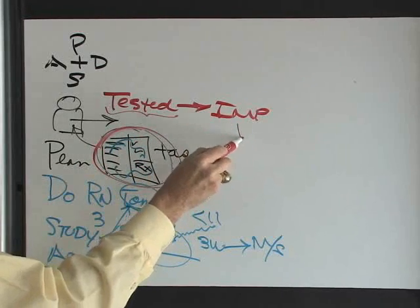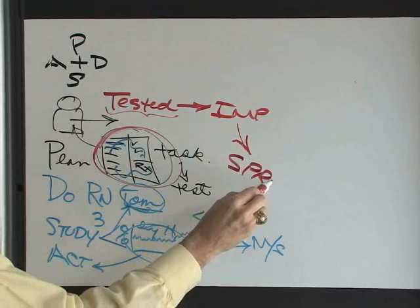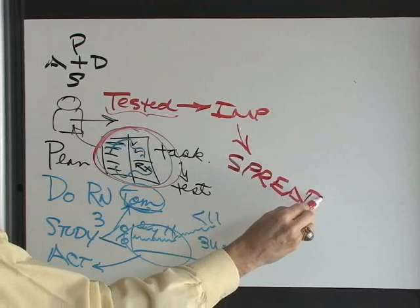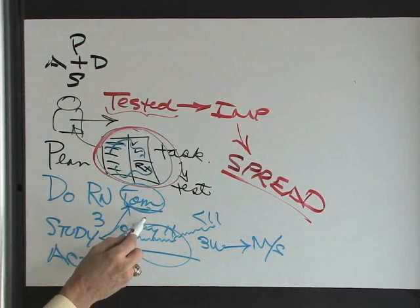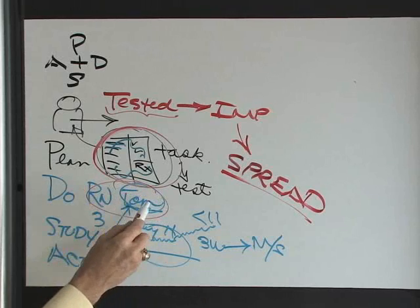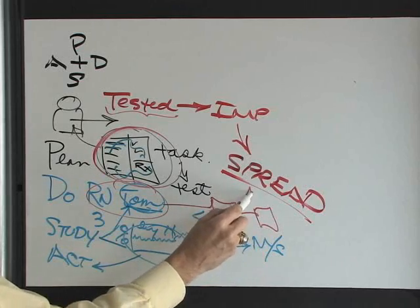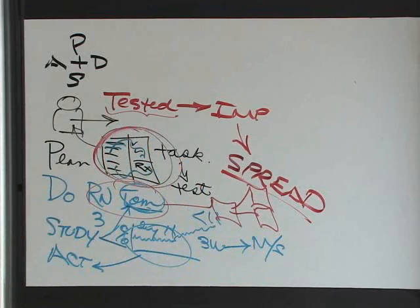And finally, once we've implemented, we'll be ready to engage ourselves in some spread. Let's say that we are part of a system, and that system has three hospitals. So we've been testing it starting on one unit, Tom's unit. Then we're going to go to this hospital. Then we're going to move to the next two hospitals and spread that that has been tested and documented.